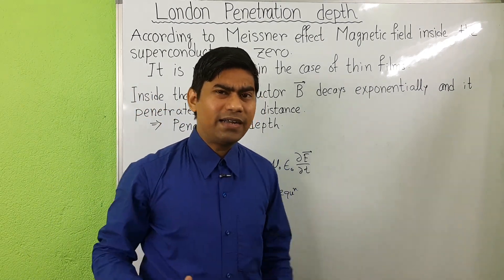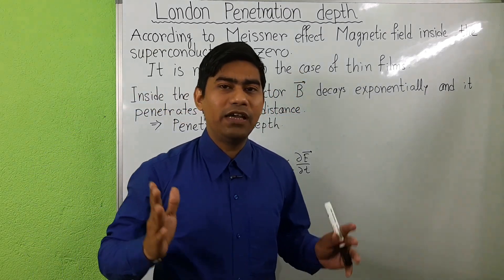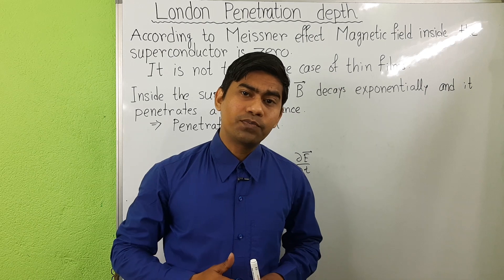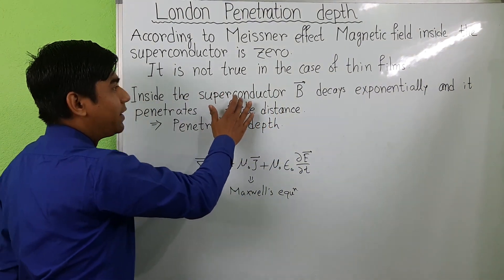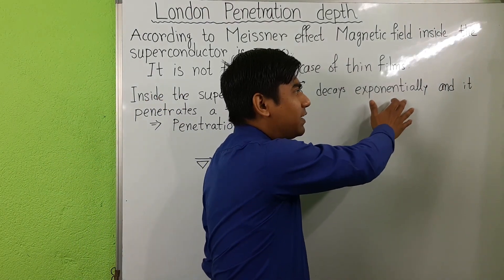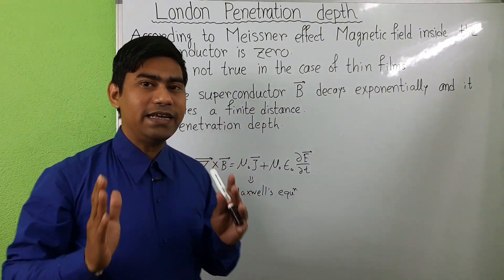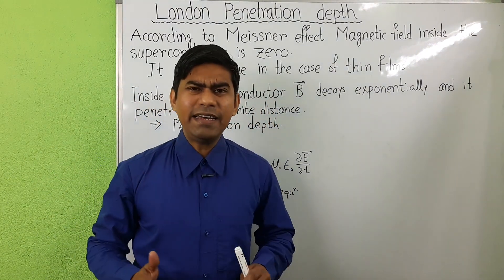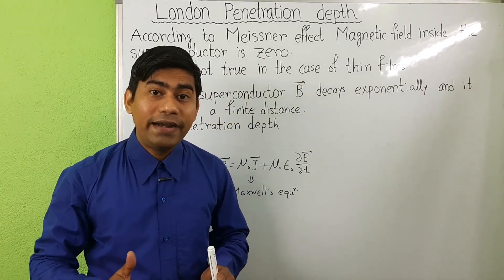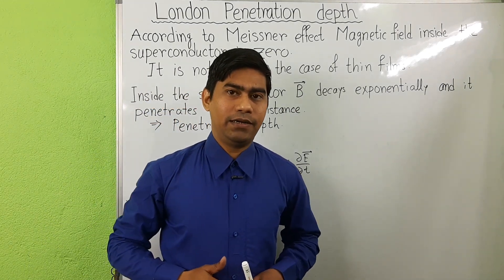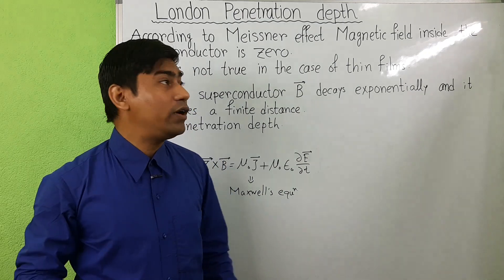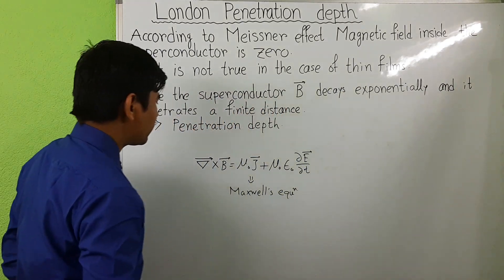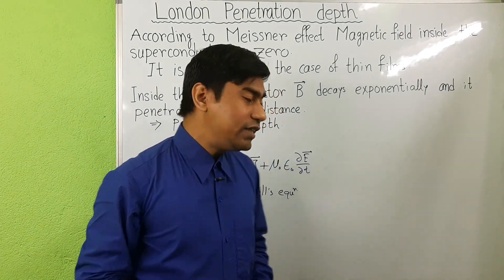According to the Meissner effect, the magnetic field inside the superconductor is zero, but this is not true in the case of thin films. It is observed that inside the superconductor the magnetic field does not abruptly become zero. Instead, the magnetic field decays exponentially and penetrates a finite distance as we move from the surface to inside the superconductor. This finite distance from the surface is known as the London penetration depth.